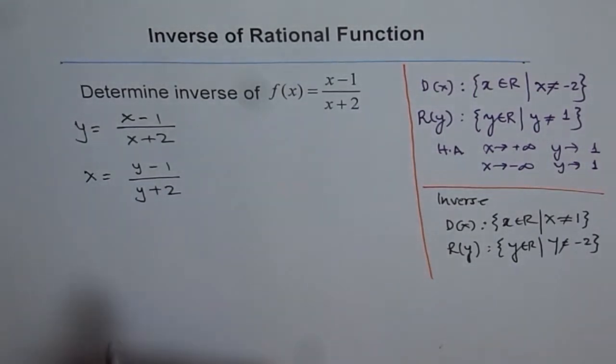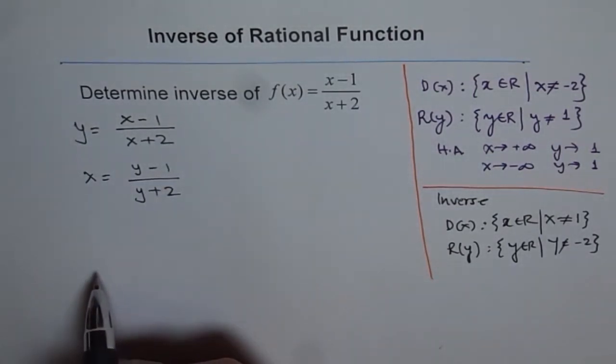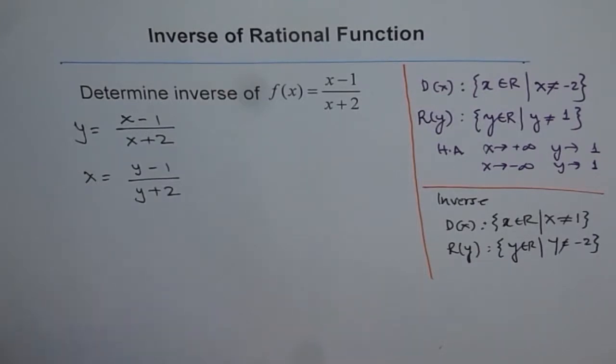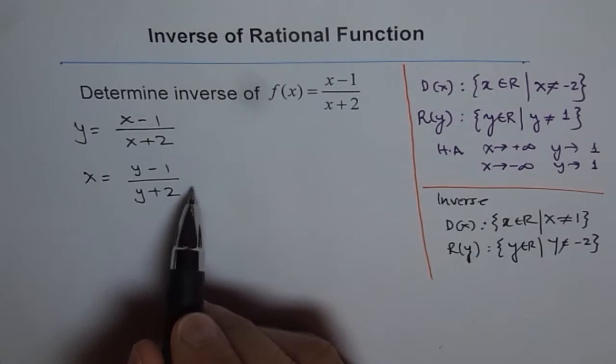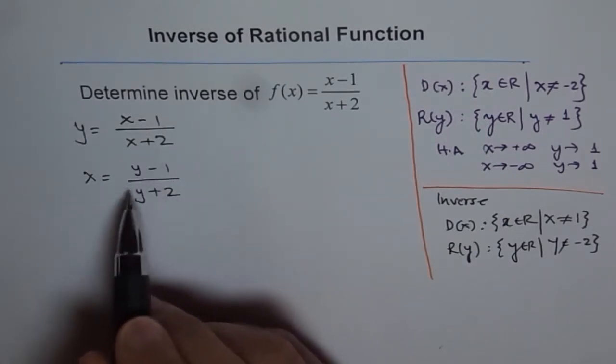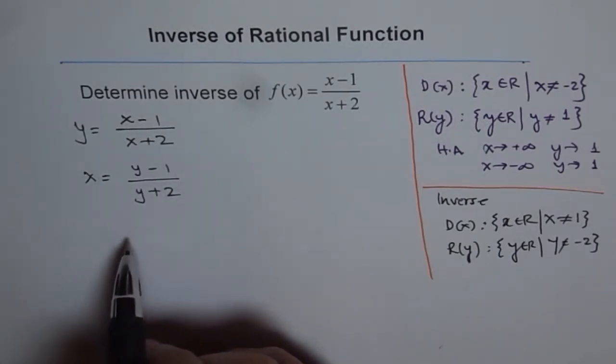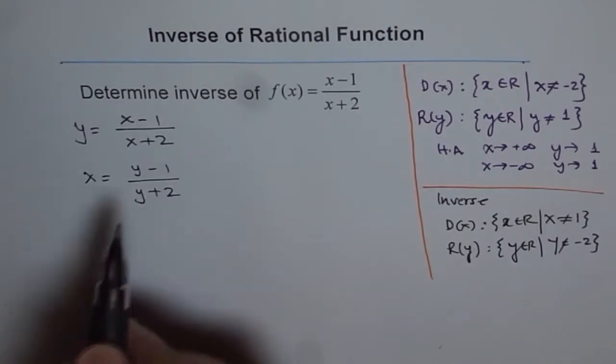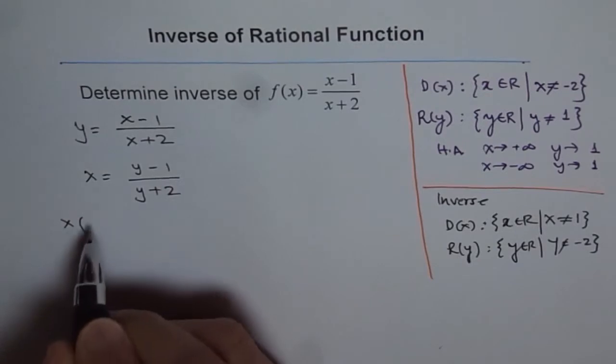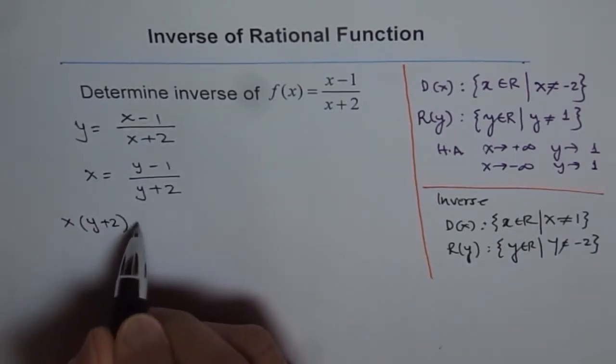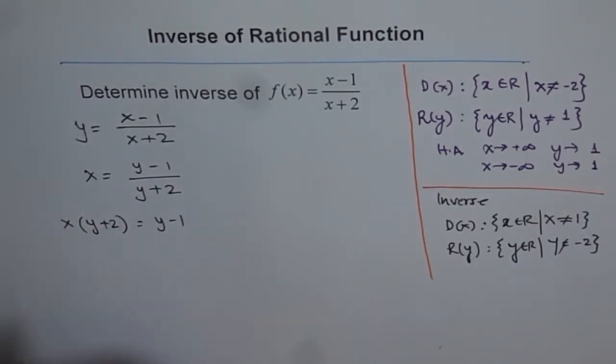Now we need to isolate y from here. That is a very tricky part. Now there are a couple of ways to do it. If I do minus 1 both sides, then also I can isolate y. But I will adopt a general method here, that is cross multiply. So I will cross multiply, say x times y plus 2 equals to y minus 1.